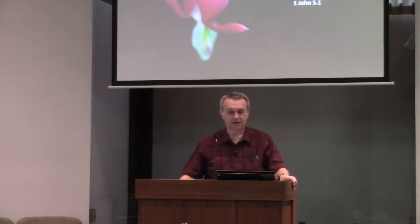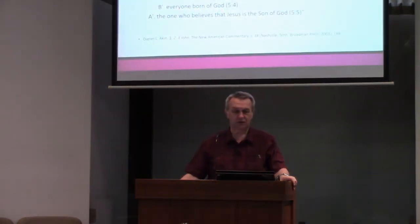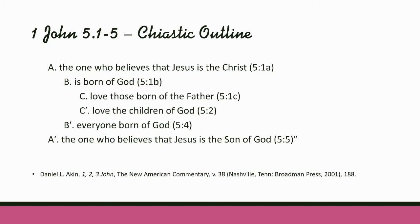One commentator displays the unity of thought in this section with a chiastic outline. I will explain what a chiastic outline is in a minute — I'm just going to show it to you. So here's 1 John chapter 5 verses 1 through 5. You can see how he has it organized. It looks like on the left-hand side we have half of an X, and the letter chi in Greek looks like an X — so that's where the word 'chiastic' comes from.